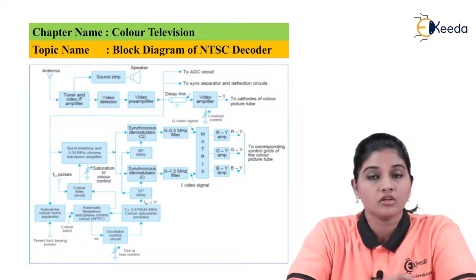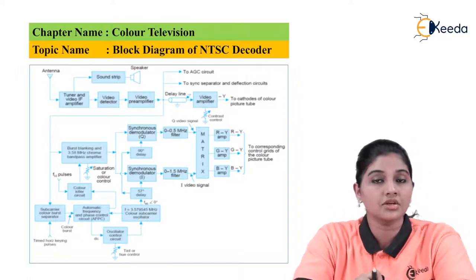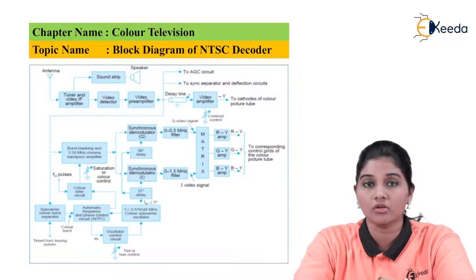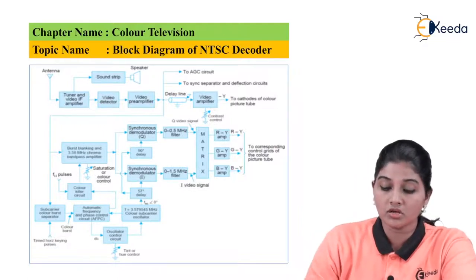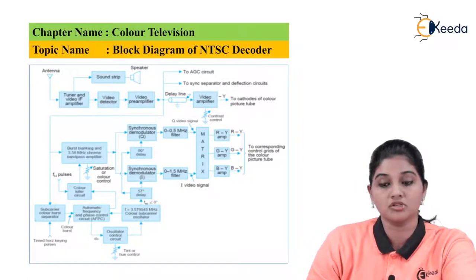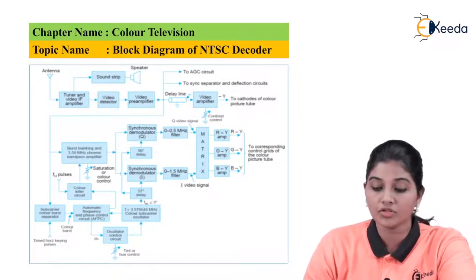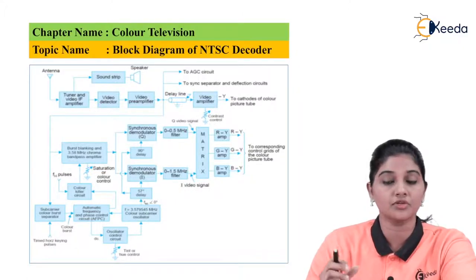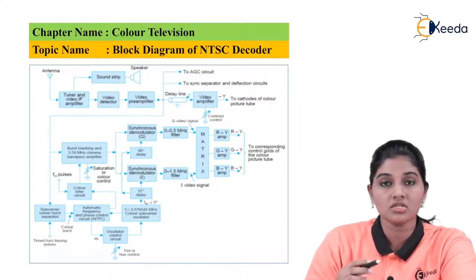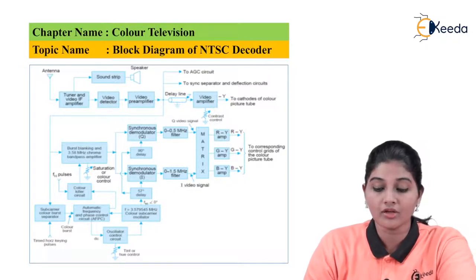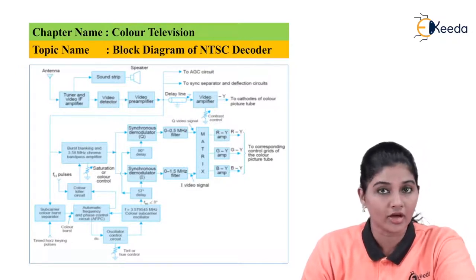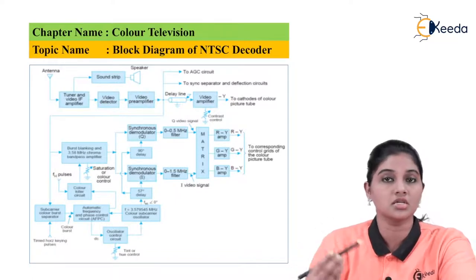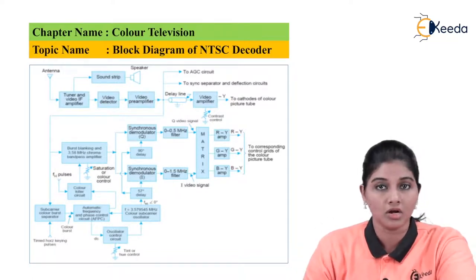So here, through the antenna the signal is received which was transmitted by using the NTSC encoder or transmitter. The tuner circuit and video IF amplifiers are used along with the video detector and video preamplifier to extract the video information. The sound signals are extracted at the tuner and video IF amplifier stage and then, by using certain amplification, the signal is given to the loudspeaker.